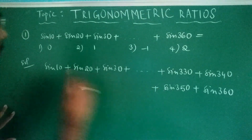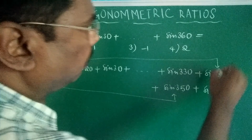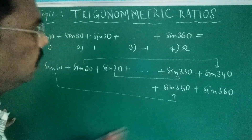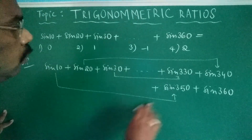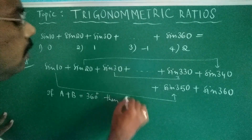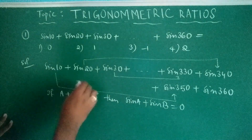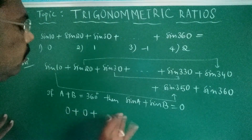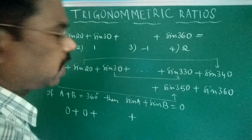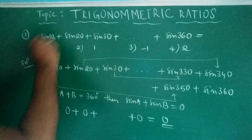Now pair: sin 10° + sin 350°, sin 20° + sin 340°, sin 30° + sin 330°, and so on. Since a + b = 360°, sin a + sin b = 0. So each pair equals zero: 0 + 0 + 0 + ... Now sin 360° = sin(270° + 90°) = cos 90° = 0. So the total value of the given expression is zero. Option 1 is the correct one.